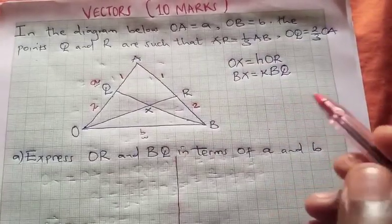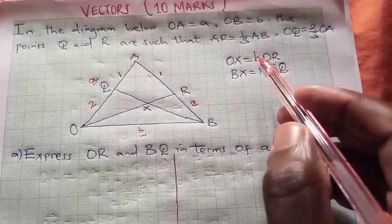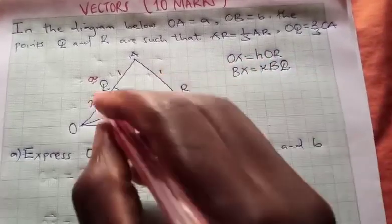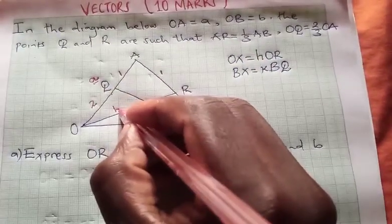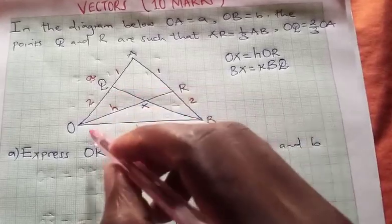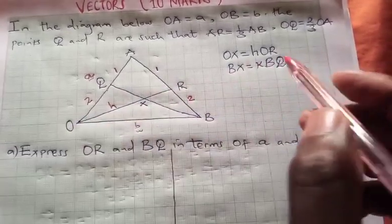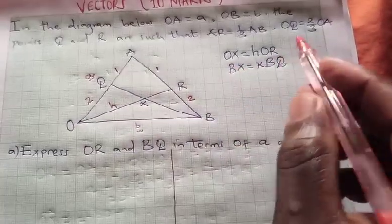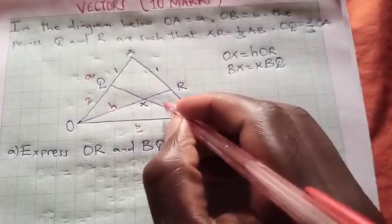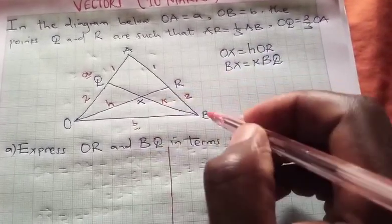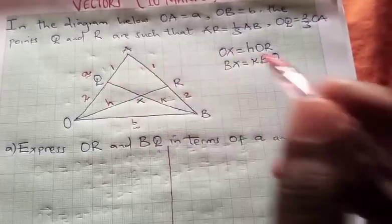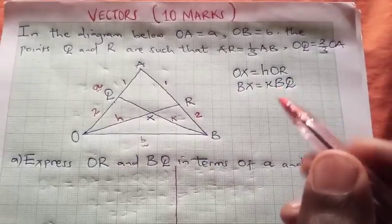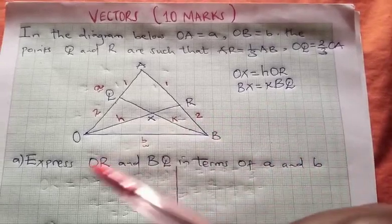Then we have another information that OX is in fact H of the line which is in fact OR, and then we have BX which is given by K of BQ. The first question reads: express OR and BQ in terms of vector a and b.